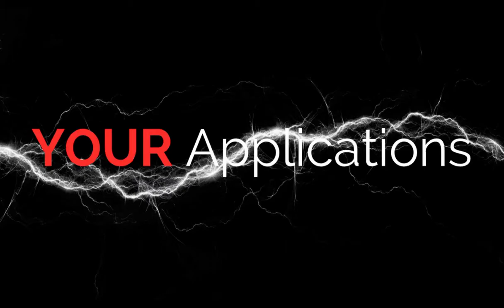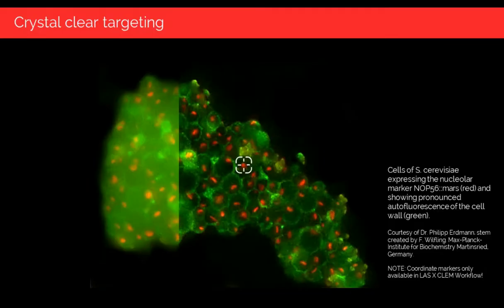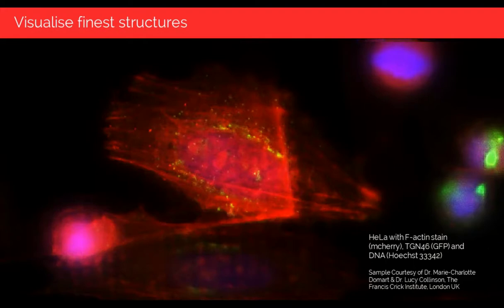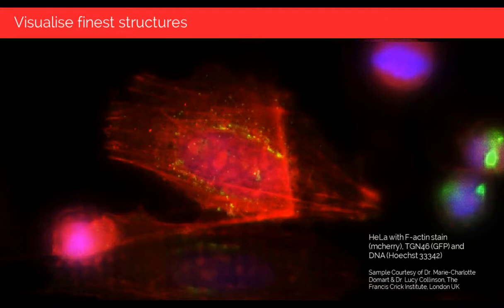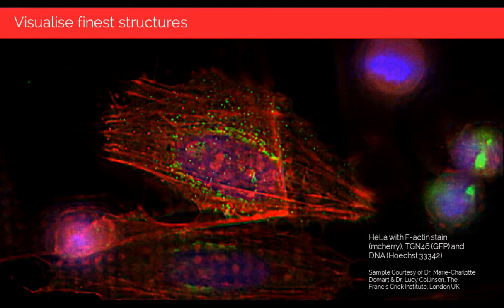Coming back to the Thunder technology — here is the yeast example again, where the nucleoli are now much easier to identify because the haze is removed. Another example shows HeLa cells kindly provided by Lucy Collinson's lab, with fibrous actin labeled in red, the trans-Golgi network in the background in yellowish color, and nuclei in blue. The Thunder results are clearly visible: the actin fibers appear sharply and the trans-Golgi network is nicely discriminated from the background.